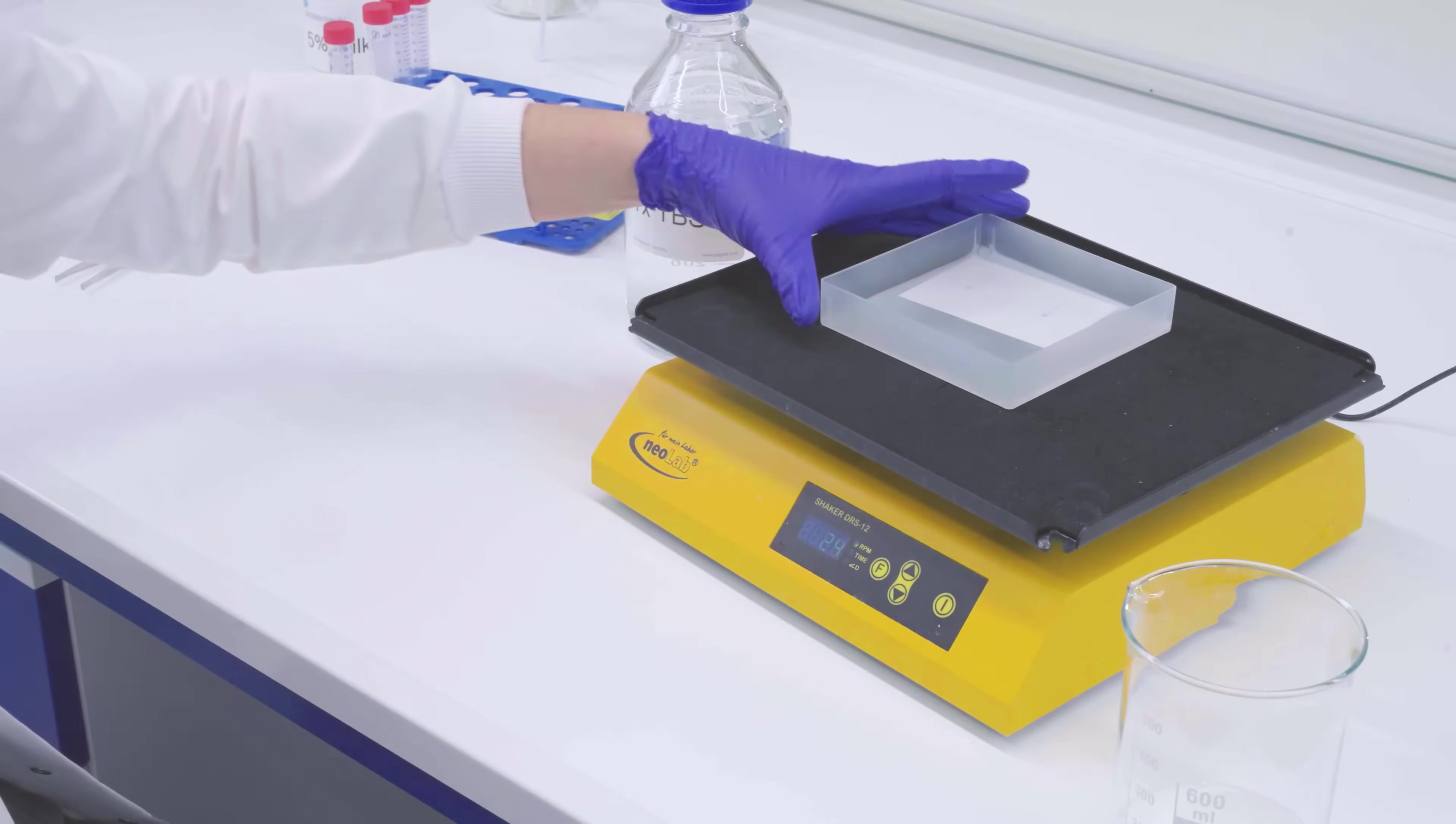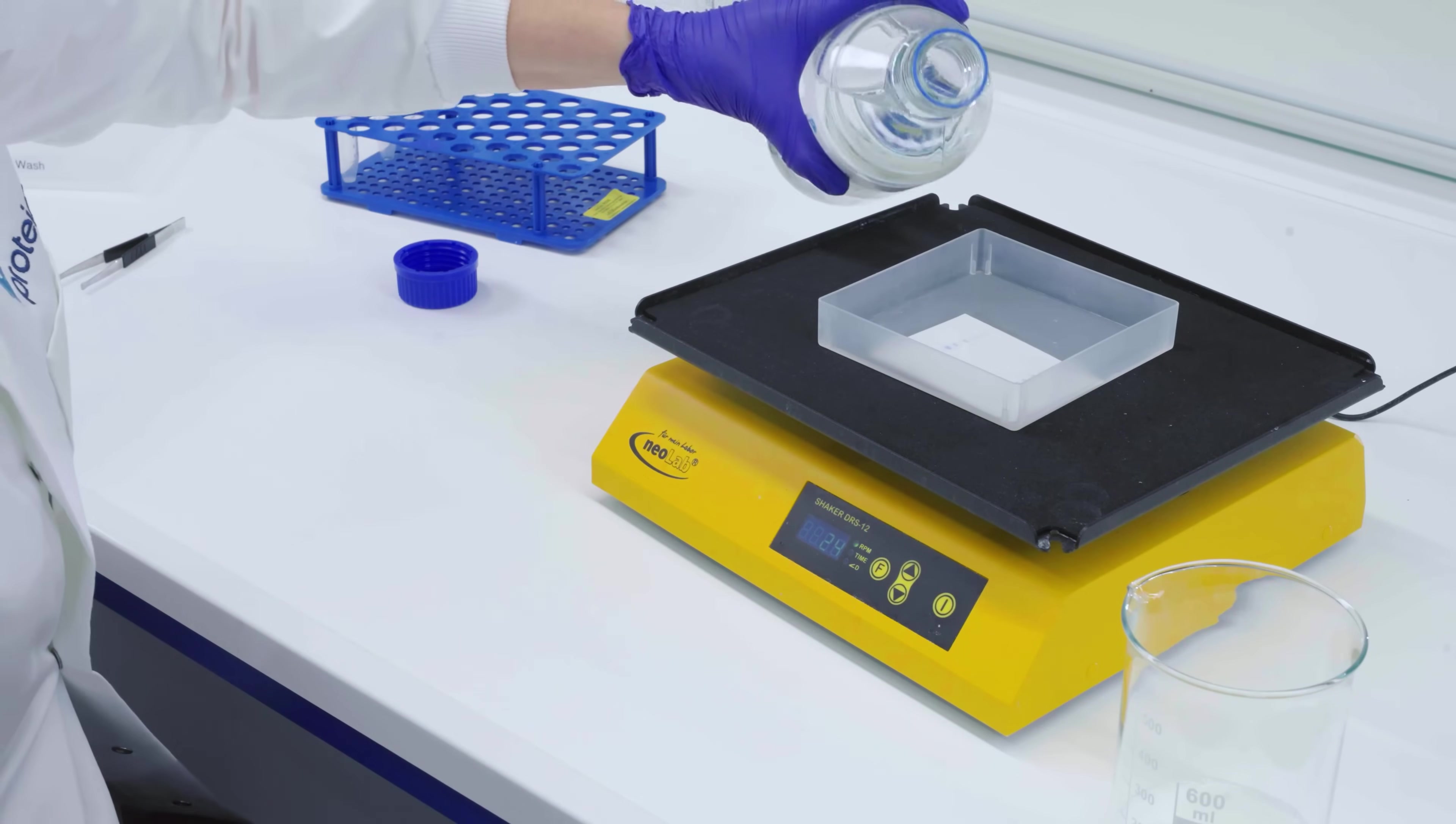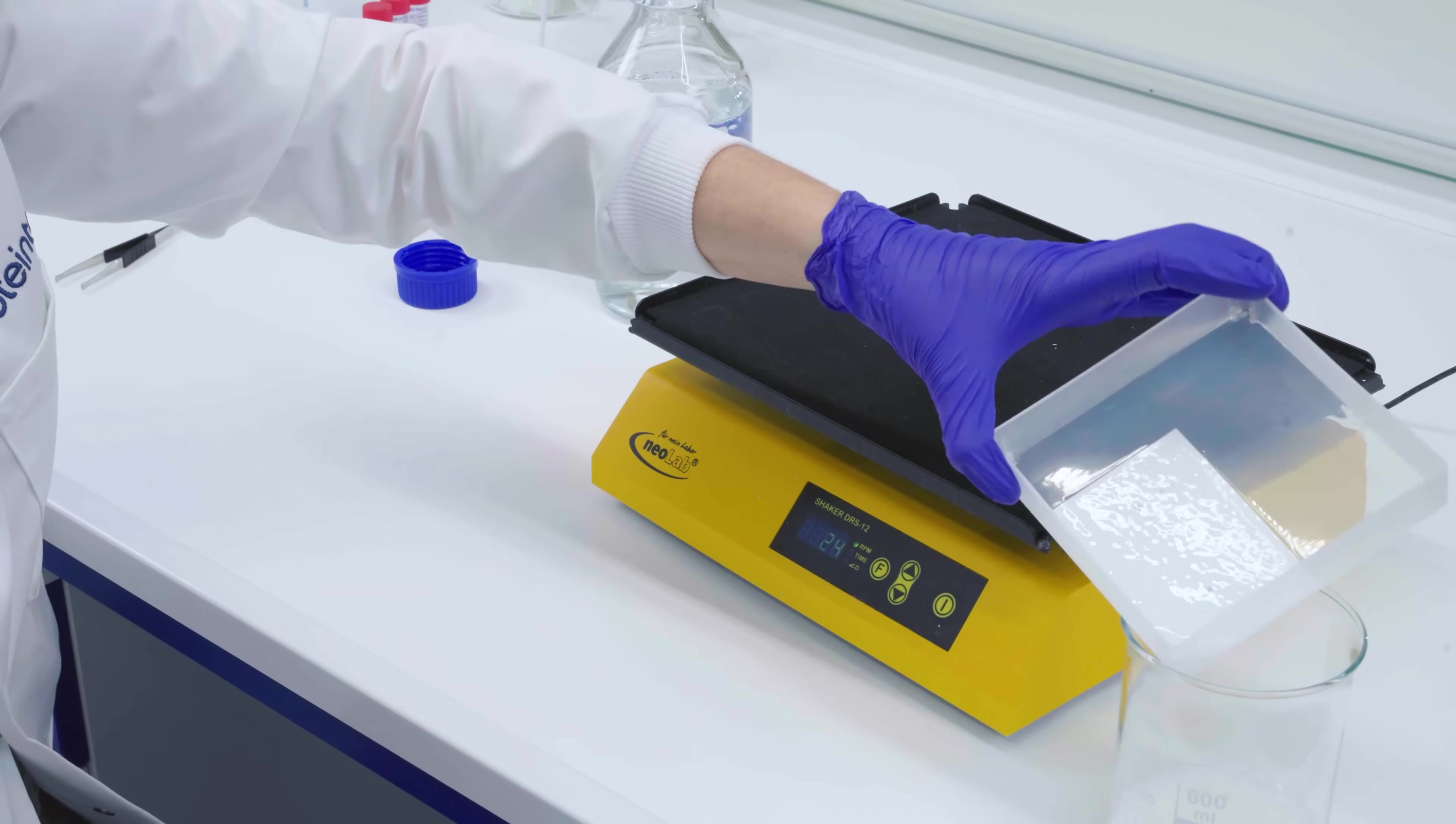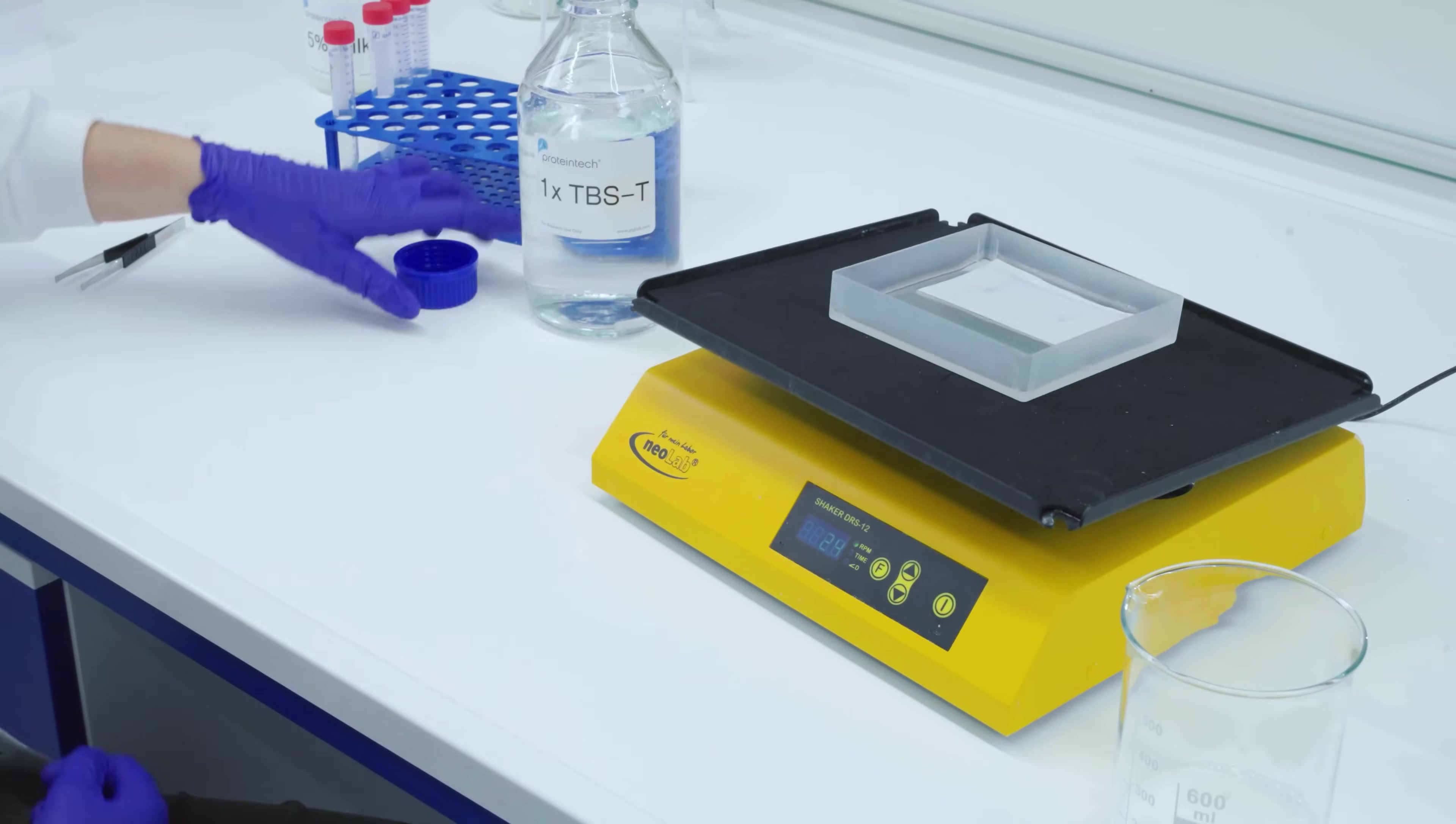Background signal is caused by nonspecific binding, so wash steps should always be performed. Typically, wash buffer is composed of tris-buffered saline or phosphate-buffered saline with 0.1% tween 20. Pour off the primary antibody and rinse the membrane with wash buffer. After the initial rinse, incubate the membrane with fresh wash buffer for 5 to 10 minutes with agitation. Repeat this 3 times.